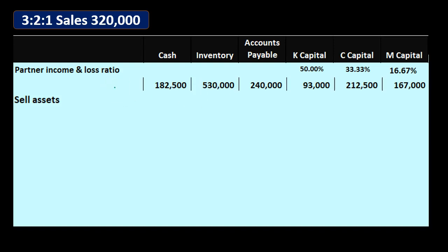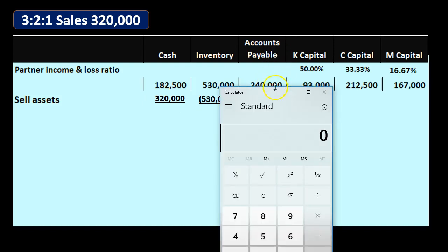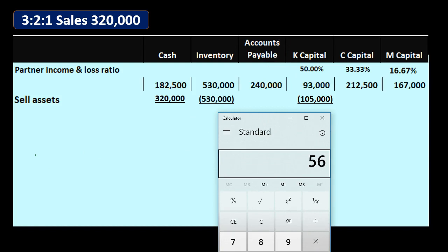We're going to sell the assets. We're selling them for $320,000 and they're on the books for $530,000, so clearly we have a loss. We take them off the books, remove the inventory, and then split the difference between the partners in accordance with their profit sharing agreement. The $530,000 minus $320,000 gives us a loss of $210,000.